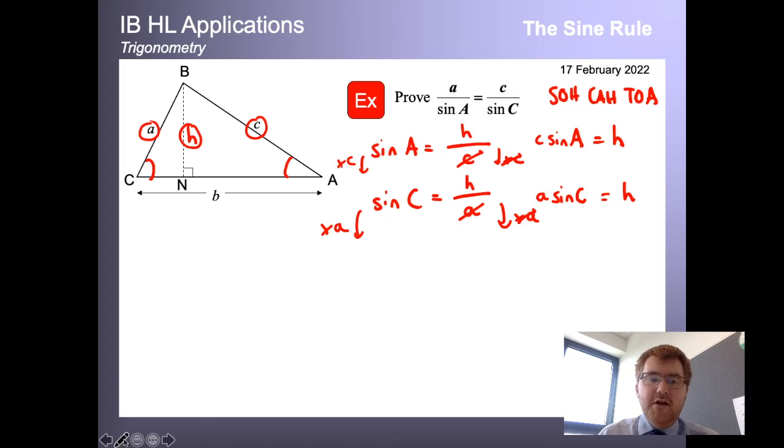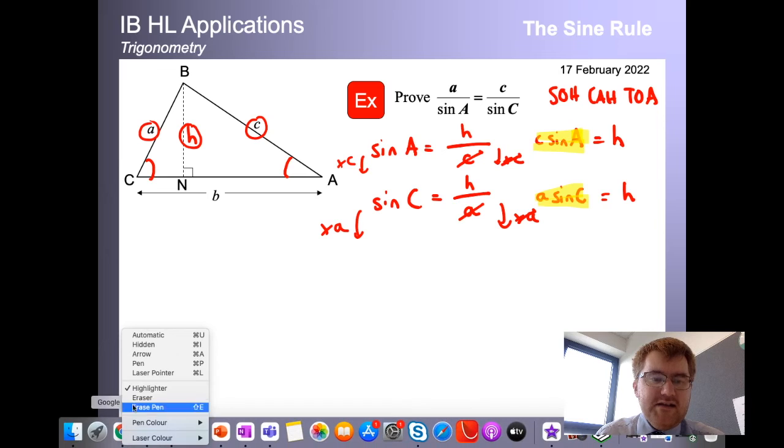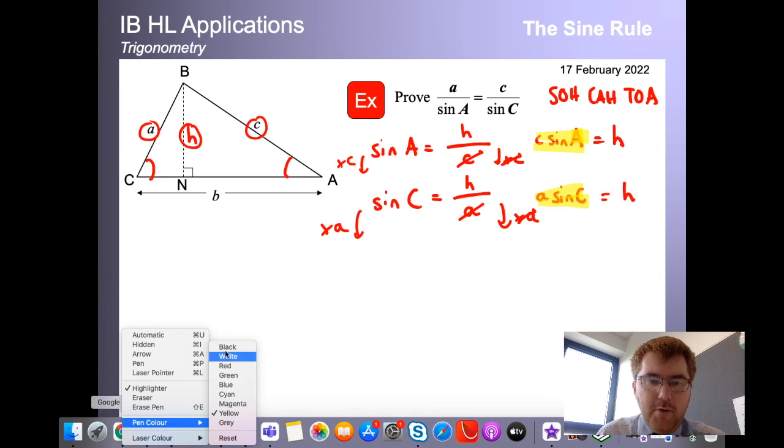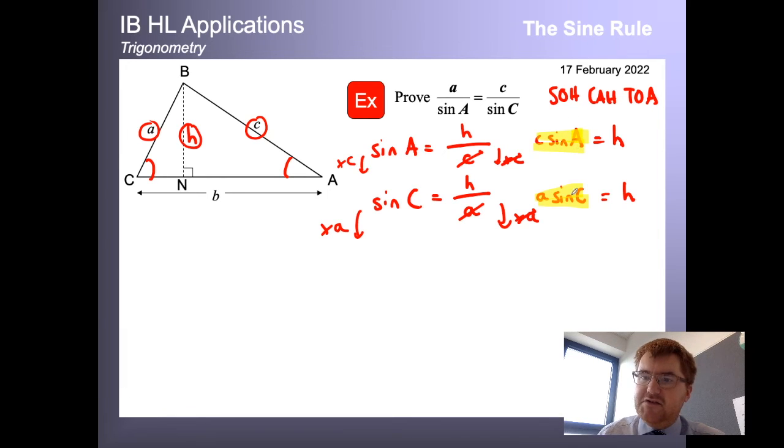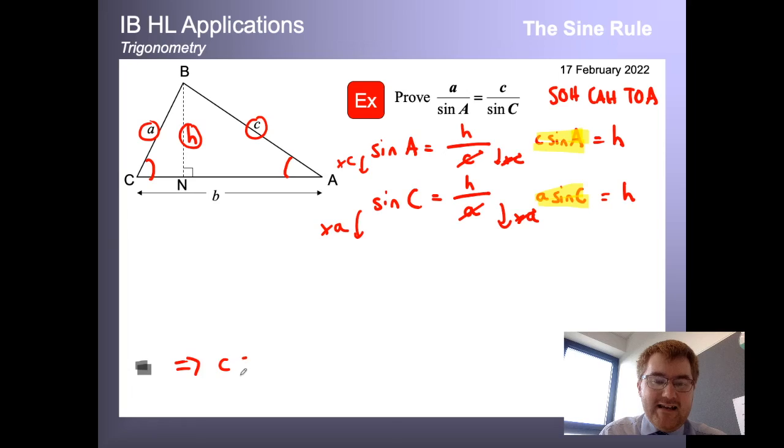And what we notice here, if I put the highlighter on, is that this and this are both equal to the same value. They're both equal to H. So what we can say then, from that point, is that these two things highlighted are also equal. Therefore, C sine A is equal to A sine C.